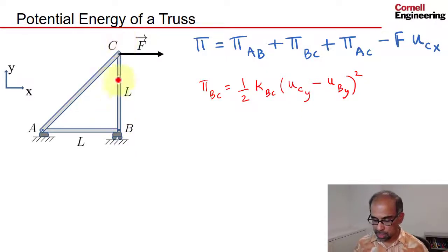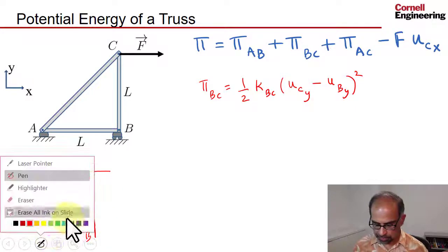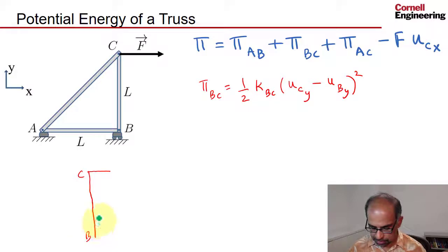Now let's take a look at pin C and see what happens if pin C can move only in the horizontal direction and how it affects BC. Let me draw that here. That's BC, sorry about the chicken scratch. Let's say pin C moves in the x direction, so the new position is something like that.